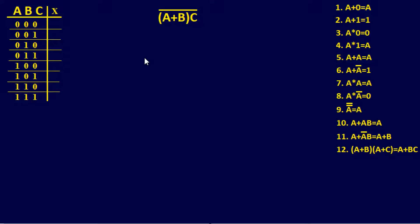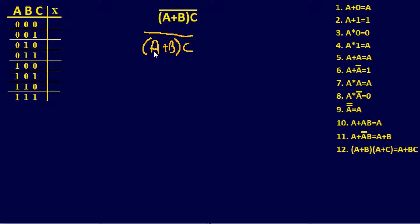For this first example, let's jump to a relatively easy one. We have A plus B times C, with not over the whole equation. Once we're complete, we'll go ahead and fill out the truth table to our left. Per our chop and swap method, we're going to rewrite this as A plus B times C, not over the whole equation. We can't just fill this out directly — we've got to use DeMorgan's Theorem to come up with a complete and final equation.